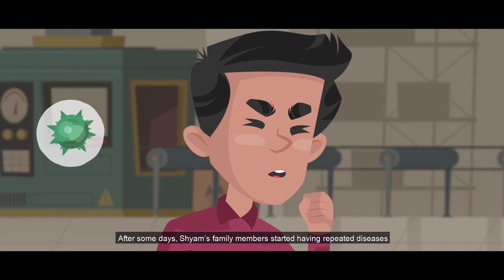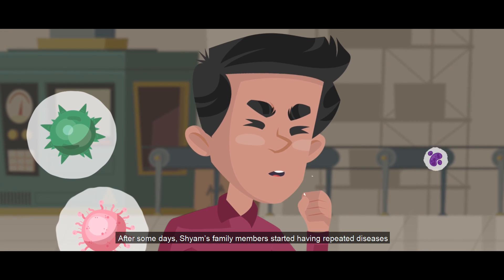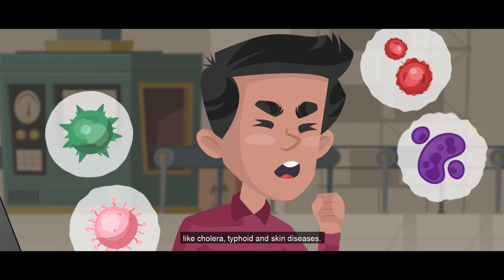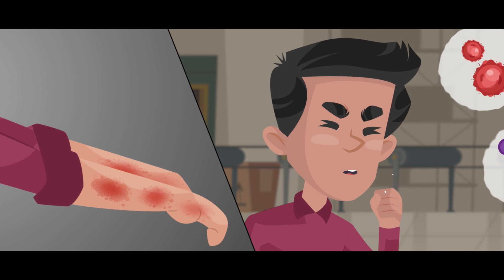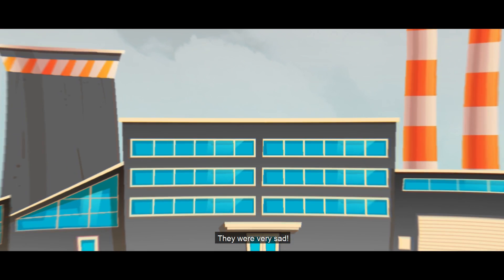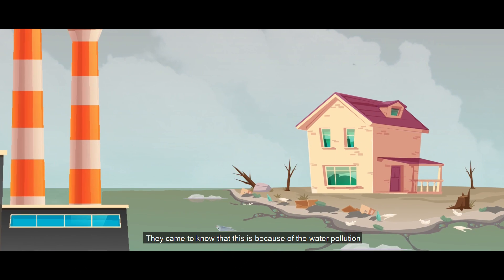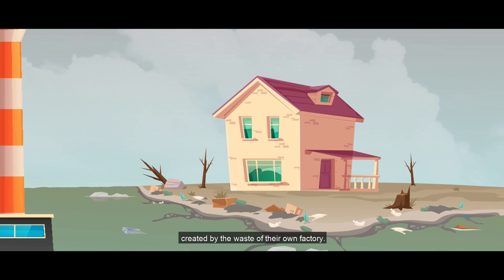After some days, Sham's family members started having repeated diseases like cholera, typhoid and skin diseases. They were very sad. They came to know that this is because of the water pollution created by the waste of their own factory.